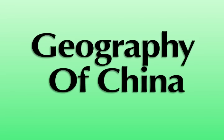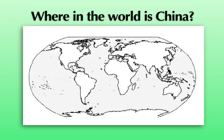When talking about Chinese geography, the most important question to ask is: where in the world is China? Look at this map and identify the location of China. China is located in Eastern Asia.